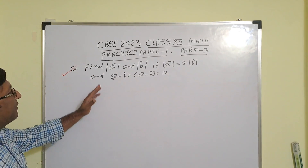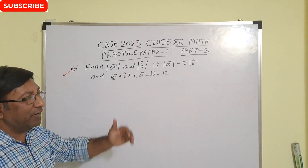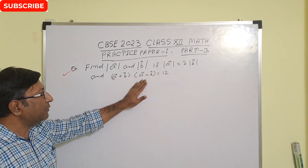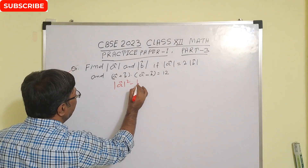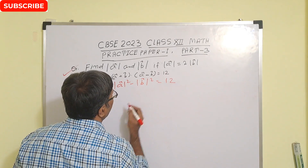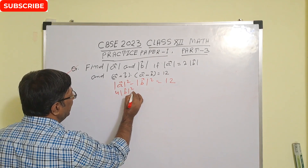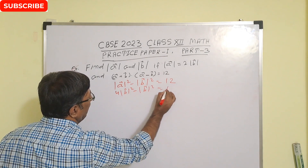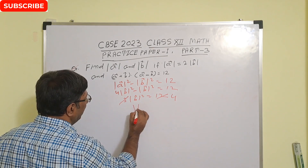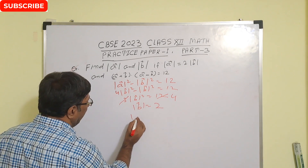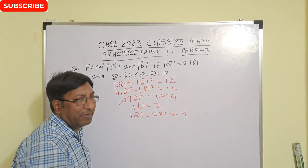Find the magnitudes of vectors A and B, given that |A| = 2|B| and (A + B)·(A − B) = 12. We know (A + B)·(A − B) = |A|² − |B|² = 12. Substituting |A| = 2|B|: 4|B|² − |B|² = 3|B|² = 12, so |B|² = 4, giving |B| = 2. Therefore |A| = 2 × 2 = 4.